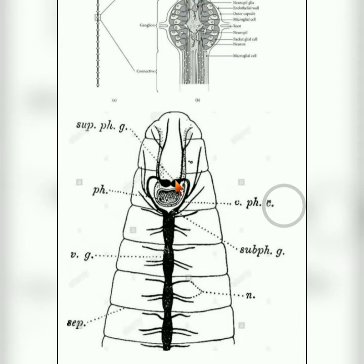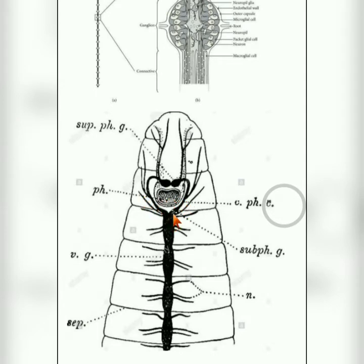Supra means above, so the suprapharyngeal ganglion is situated above the pharynx. Circum means round, so the circumfaryngeal ganglion surrounds the pharynx. The third one, the subpharyngeal ganglion, is located below the pharynx part.